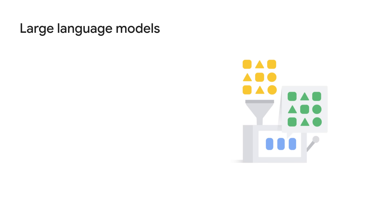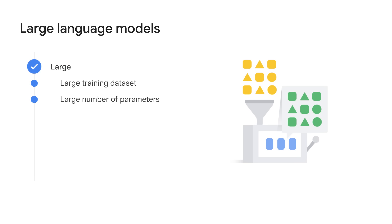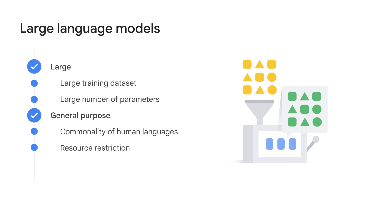Let's further break down the concept into three major features of Large Language Models. Large indicates two meanings. First is the enormous size of the training dataset, sometimes at the petabyte scale. Second, it refers to the parameter count. In ML, parameters are often called hyperparameters. Parameters are basically the memories and the knowledge that the machine learned from the model training. Parameters define the skill of a model in solving a problem, such as predicting text.